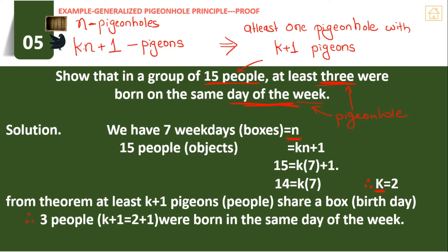According to the previous theorem, 15 people gives us kn+1 value. If we put the value of n, we get 15 = k×7 + 1. Subtracting 1, we get 14 = k×7, so k = 2. From this theorem we show that there are at least k+1 pigeons—the value of k is 2, so 2+1 = 3 pigeons share a box. Here pigeons are people and the box is the birthday, meaning 3 people were born on the same day of the week.